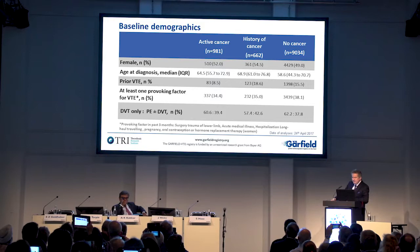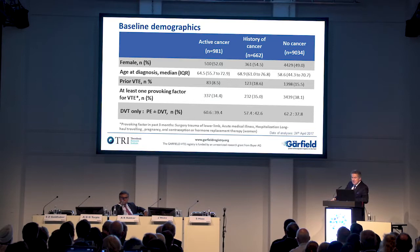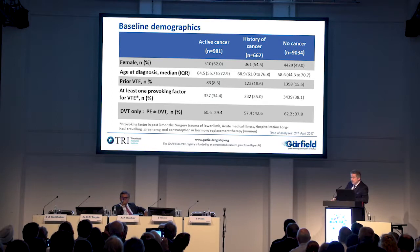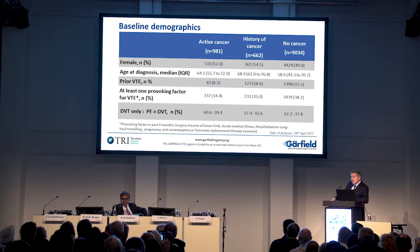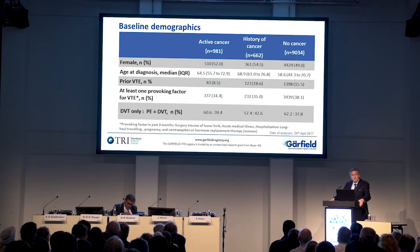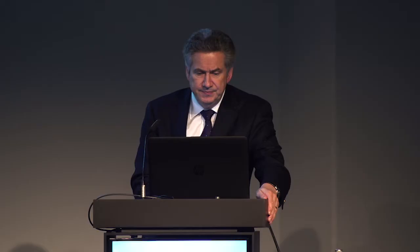Looking at baseline characteristics across the three groups, we see a similar distribution of men and women. The median age of patients with active cancer or a history of cancer is a little older than those with no cancer. Interestingly, patients with active cancer had a lower percentage with a history of prior VTE. The distribution of DVT versus PE is very similar across all three groups — about 60% have DVT, and the remaining patients have PE with or without accompanying DVT.